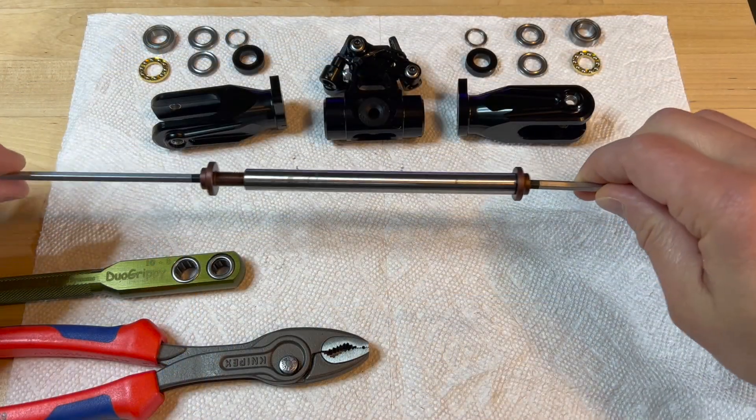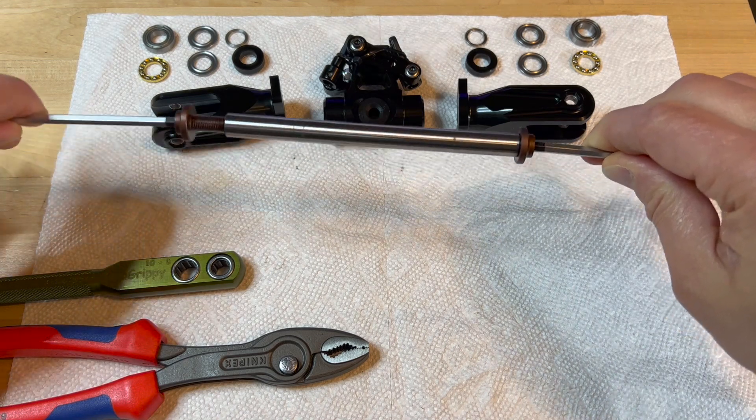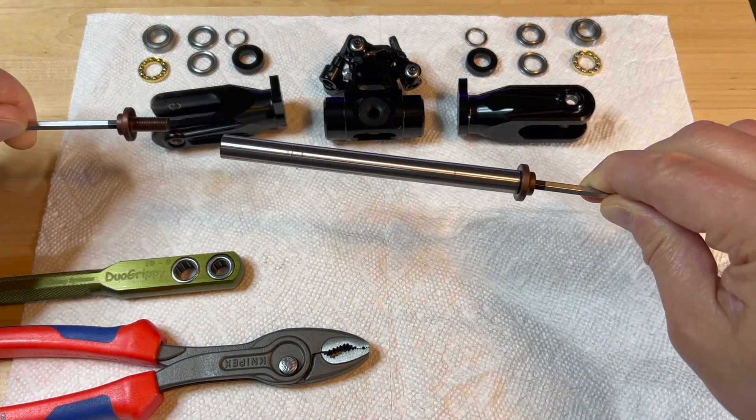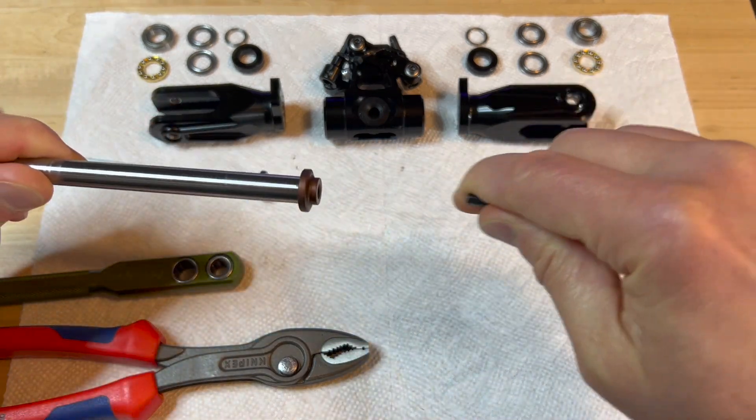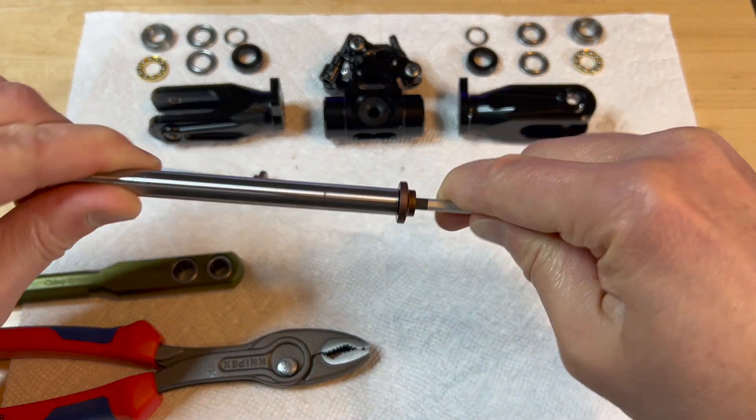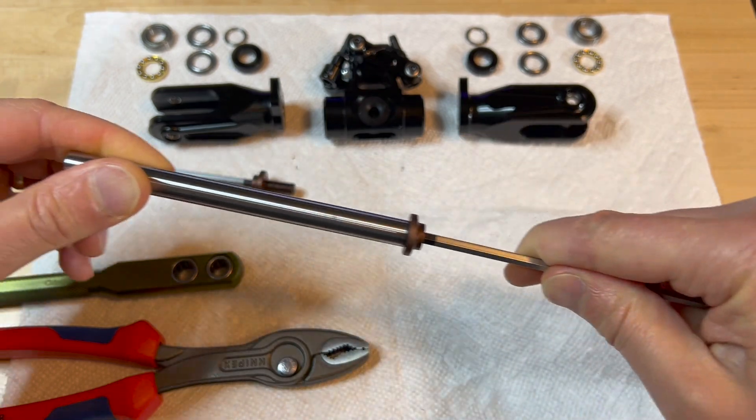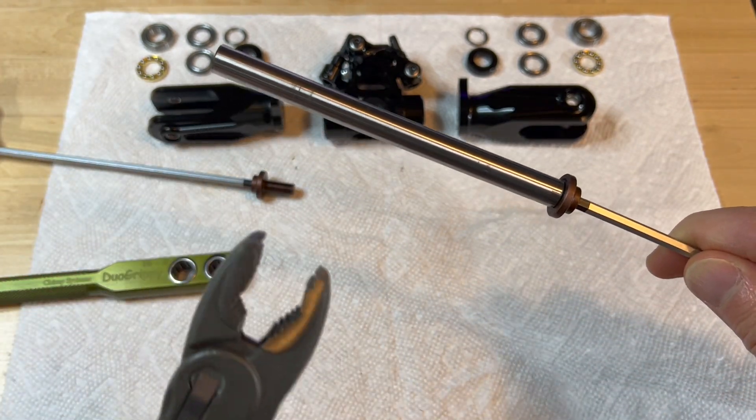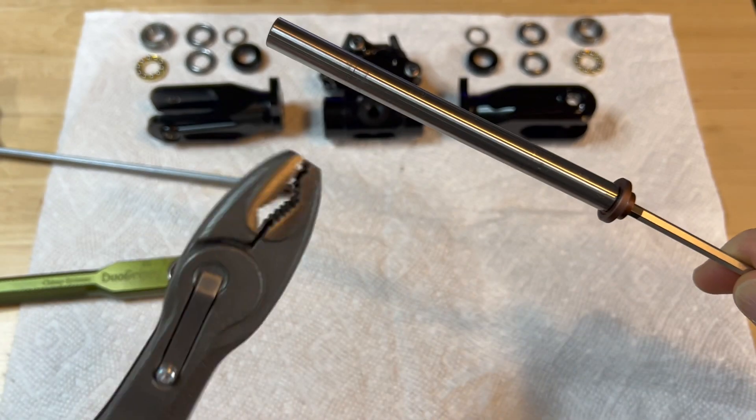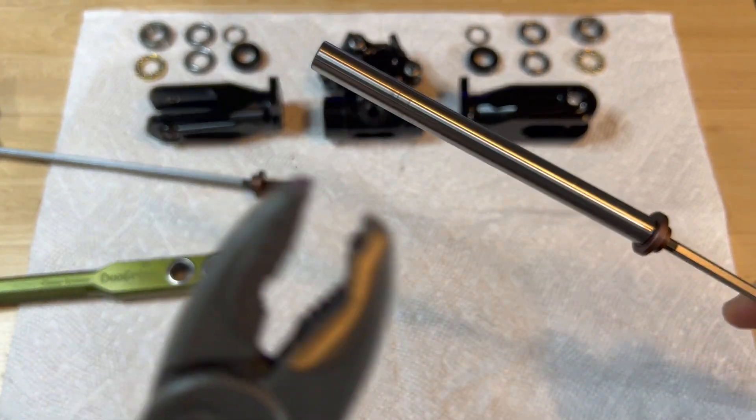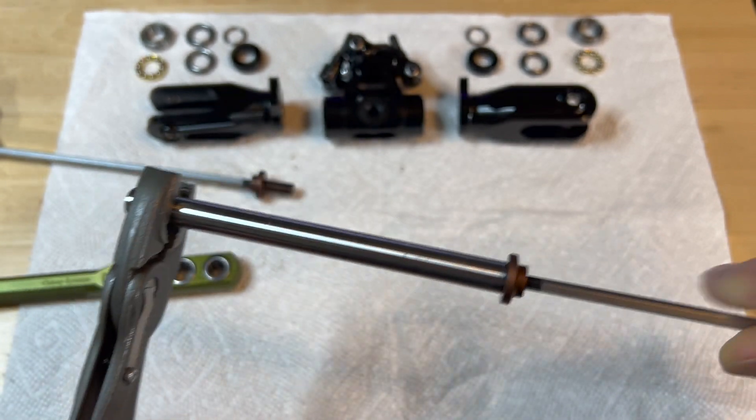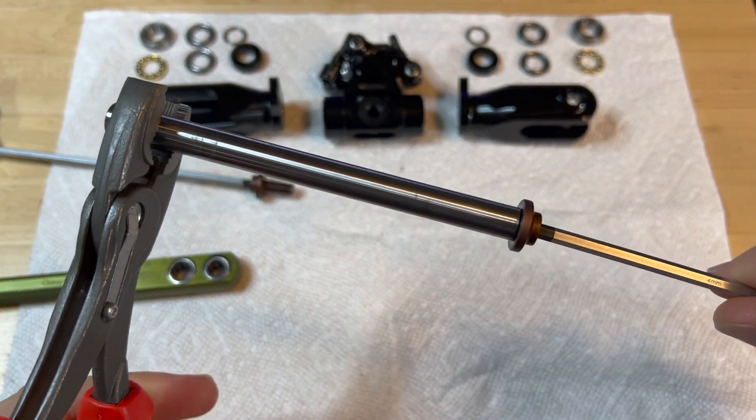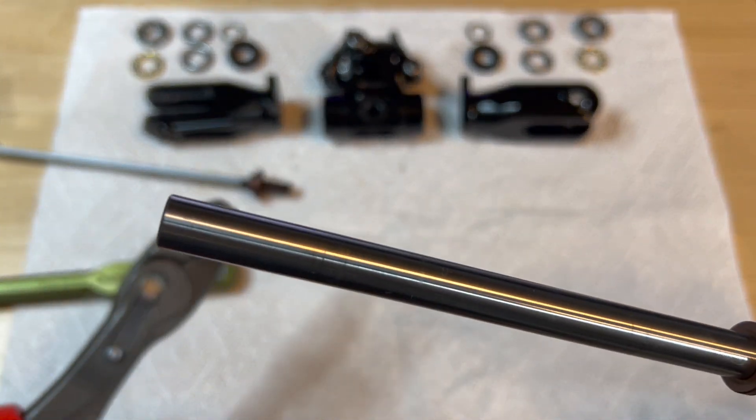So now I disassemble the head and only one side came out. This other side is not coming out no matter what I do. You might think to just get one of these sharp pliers and grab here and turn, right? Please don't do that. That's just gonna damage the shaft.